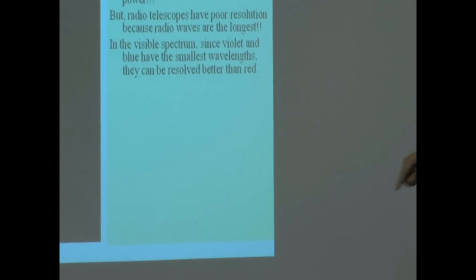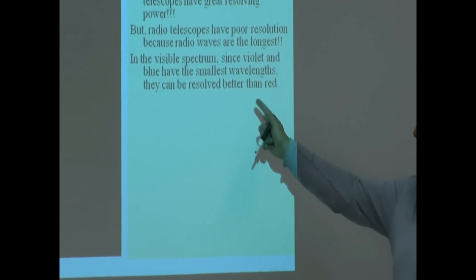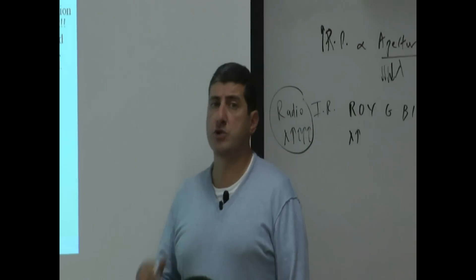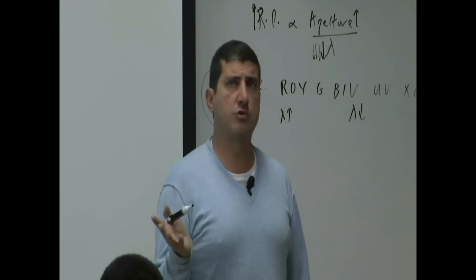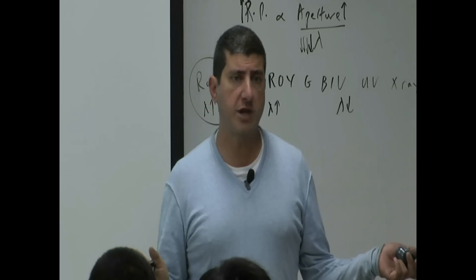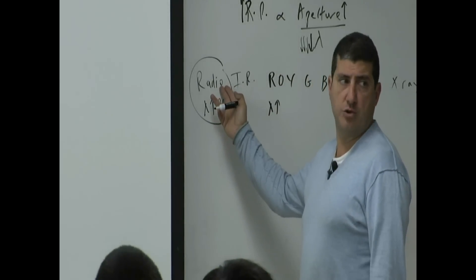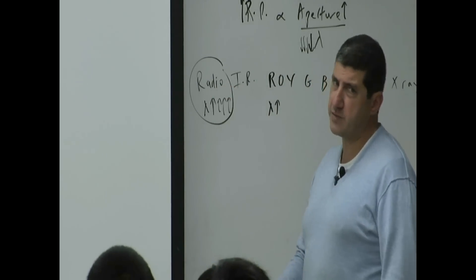So, and then the next thing it says, indivisible, since violet and blue have the smallest wavelengths, they can be resolved better than red. So, that's exactly what we had said. So, does that mean we can conclude let's no longer use radio waves? Let's no longer use radio telescopes if they have poor resolution? The answer is no.